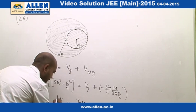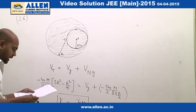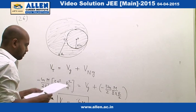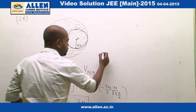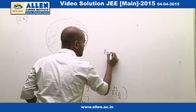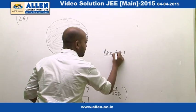So our answer is V_given = minus GM/r, which is option number 4. The answer to this question is 4.